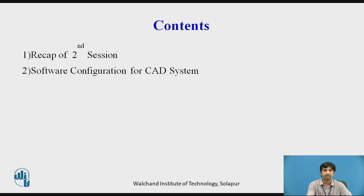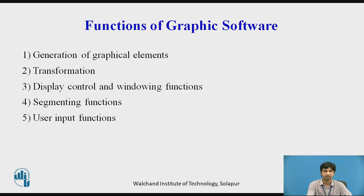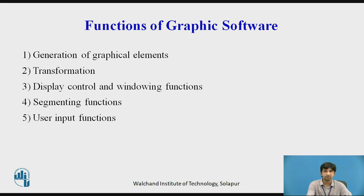Functions of graphic software: graphic software permits the interaction between user and system. While doing this, graphic software is expected to perform various kinds of functions. These functions may include generation of graphic elements with desired shape, size, and orientation, and finally displaying on the screen. These different kinds of functions can be combined into the following five functional groups. The first is generation of graphical elements.